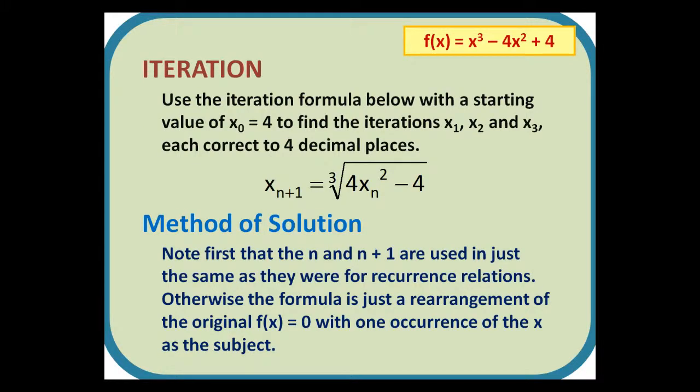ITERATION. Question: Use the iteration formula below, with the starting value of x0 equals 4, to find the iterations x1, x2, and x3, each correct to four decimal places.